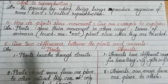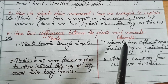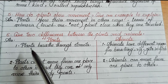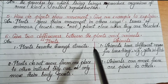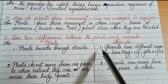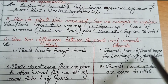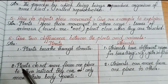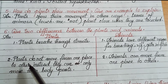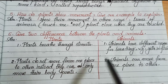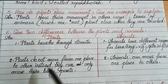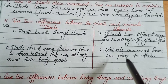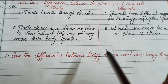Number 6. Give two differences between plants and animals. Plants: Number 1 - Plants breathe through stomata. Animals have different organs for breathing, for example gills in fish. Number 2 - Plants do not move from one place to another; instead they can only move their body parts. Animals can move from one place to another.